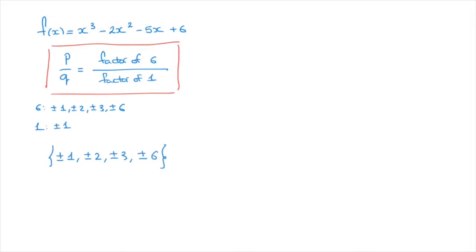And we're done — we've just listed all the possible rational roots of this polynomial function. Careful though: these are possible or potential roots, meaning the rational root theorem isn't telling us that each of these is a solution. All it allows us to do is come up with a list of potential rational solutions. You can check for yourselves, but the zeros of this polynomial function are 1, 3, and negative 2 — all rational numbers, and all inside this list.